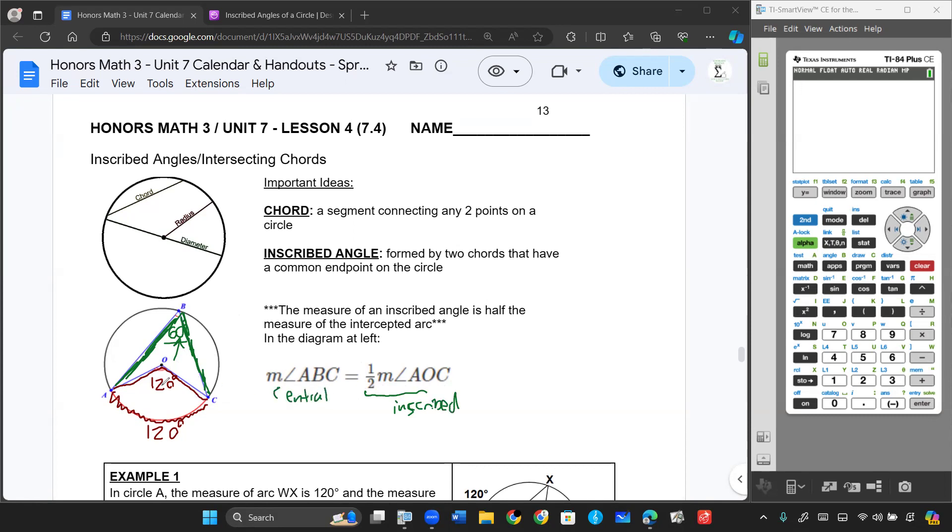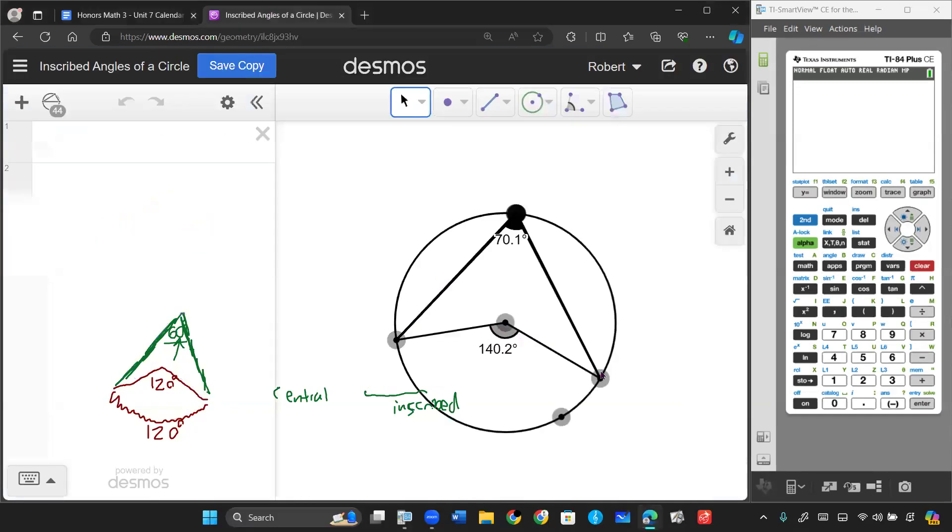And by definition, it's always going to be half of the measure of the arc that the central angle opens up to. Here's a great visualization for you guys to kind of see that relationship.